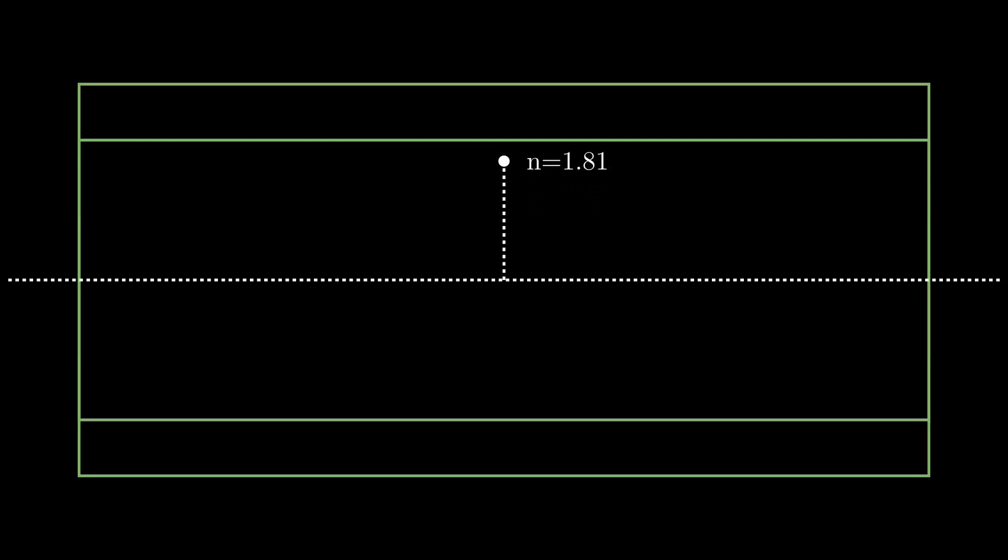Visually, we can represent this continuous spectrum using a color gradient, with greener areas representing a higher value of n. This type of cable is specifically called a gradient index fiber optic cable, or just a GRIN fiber for short.